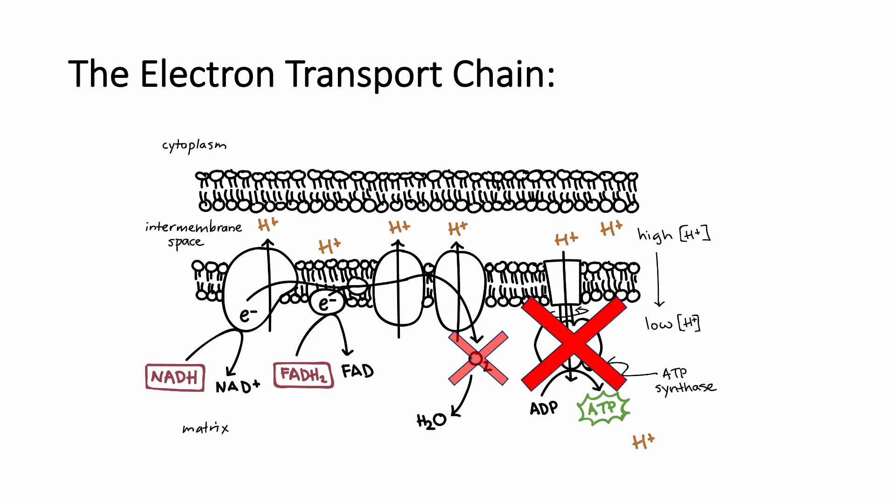In fact, the cessation of the electron transport chain marks the cessation of aerobic metabolism altogether.